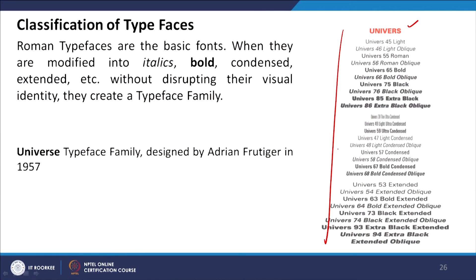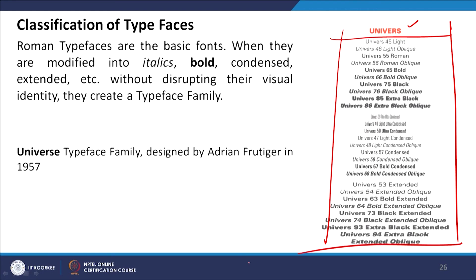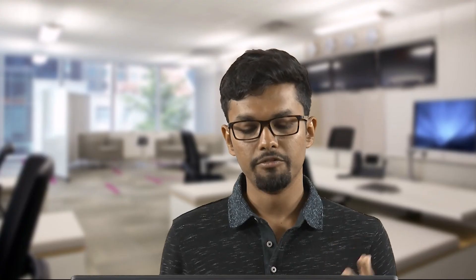This classification also applies in the digital age. One particular typeface — for example Univers — can have a lot of different variations to create hierarchy: from ultralight to very thin, very thick, extended black, and different styles from upright Roman to italic. Many different variations are available right now within a particular typeface. In the next class, we will discuss how to use all these typefaces and apply the knowledge from this lecture to see how typefaces are used in digital GUI or user interface design.